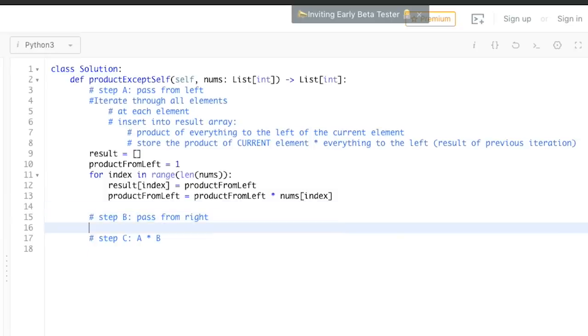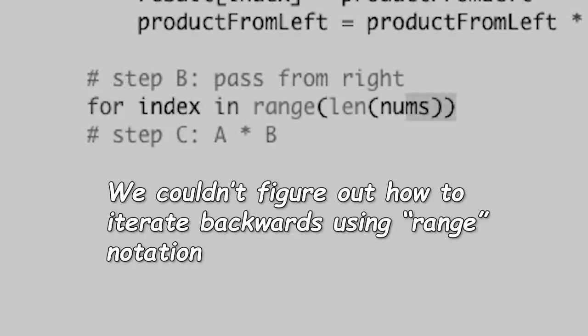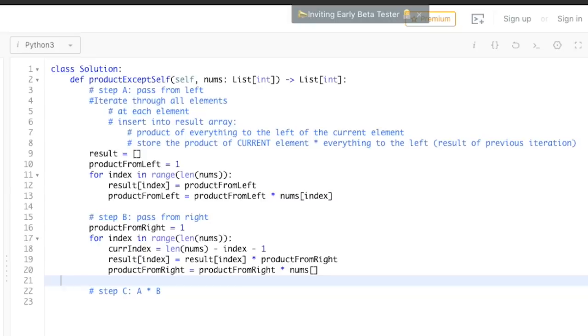So this looks good so far. And now we have another pass from the right. So what we're going to do is from index in range. Len nums. So this is basically going to be the same exact code, but for the right. So we're just going to do what we did before. We're going to keep track of product from right.